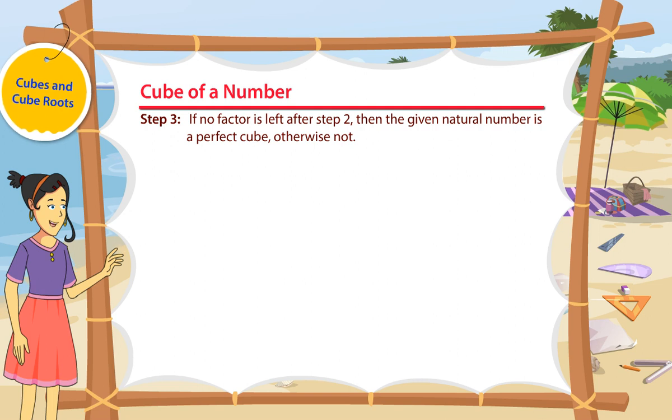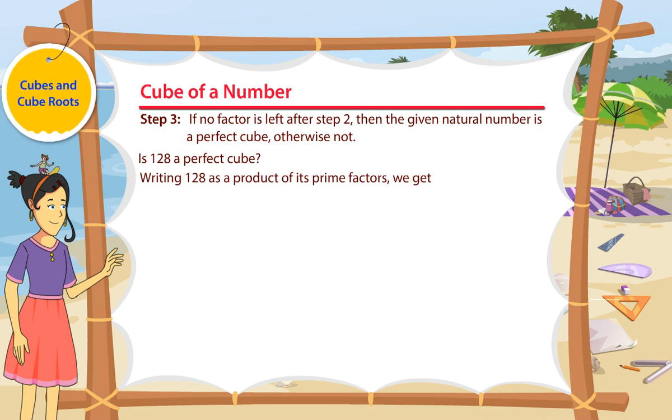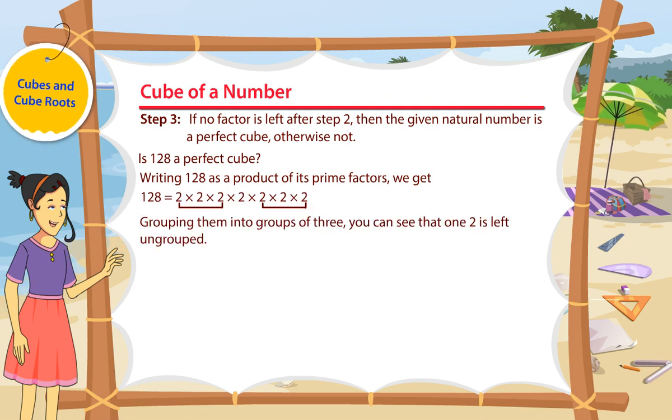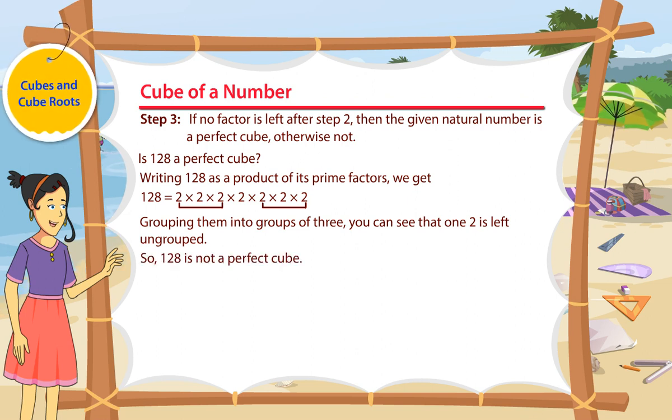Let's consider an example. Is 128 a perfect cube? Writing 128 as a product of its prime factors, we get 128 = 2 × 2 × 2 × 2 × 2 × 2 × 2. Grouping them into groups of three, you can see that one 2 is left ungrouped. So, 128 is not a perfect cube.